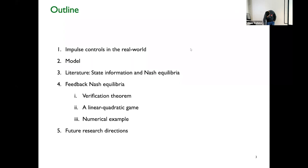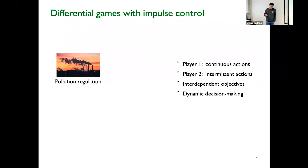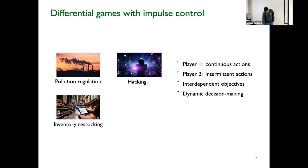In many real world applications, some agents take actions continuously while other agents act intermittently. For instance, in pollution regulation, firms continuously make production decisions while governments intervene through regulations at certain discrete time instants. These regulations could be in the form of taxes or closure of factories. Another example is in hacking, where a software firm continuously makes investments in security while hacking attempts are made only once in a while. Other examples include inventory restocking decisions taken only at certain discrete time instants while demand is continuously evolving, or lockdown policy.